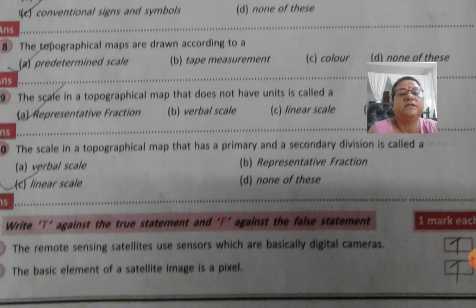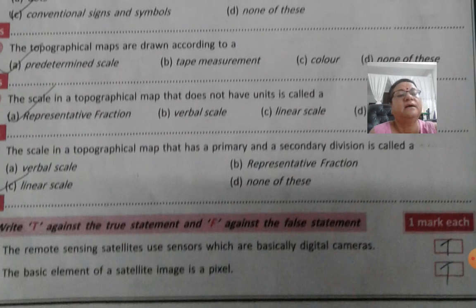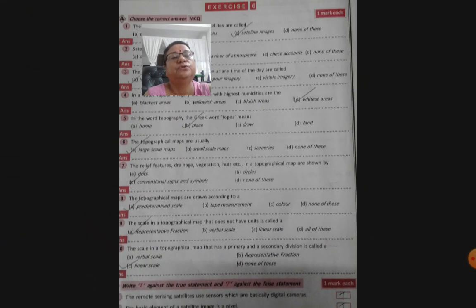Let's start true or false. The remote sensing satellite use sensor which are basically digital camera. It is true. The basic elements of satellite images is in a pixel. That is also true.